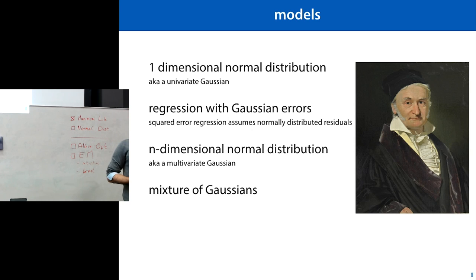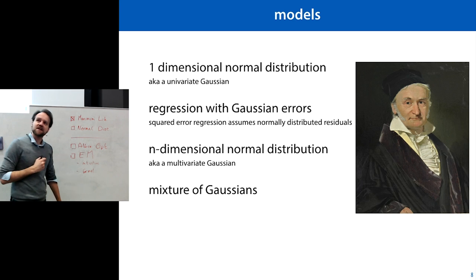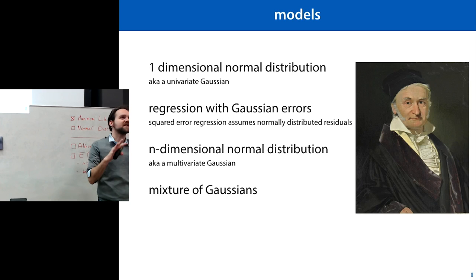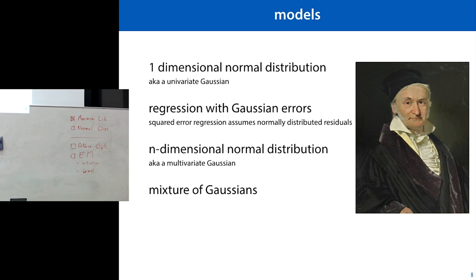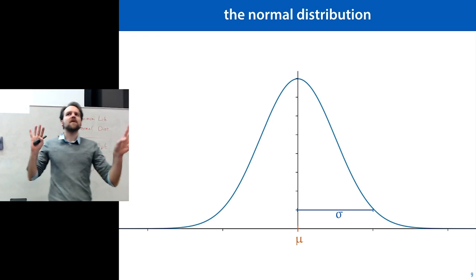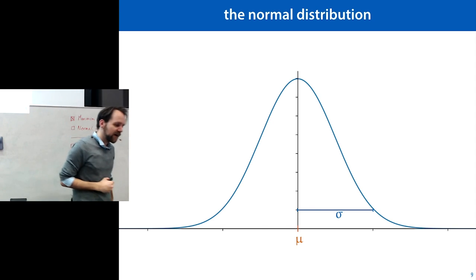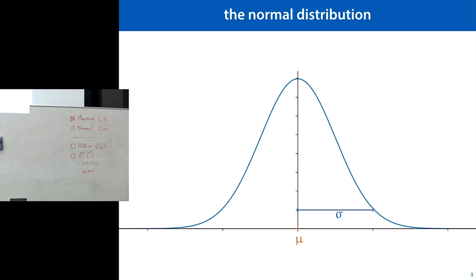A Gaussian is just a synonym for a normal distribution, named after Carl Friedrich Gauss — one of the top two finest mathematicians ever to have lived, along with Euler. He more or less invented the normal distribution. The normal distribution looks like a bell curve: the horizontal axis is your sample space, it has a mean and a variance which determine its shape, and the probability mass is in the middle — most likely outcomes are there.